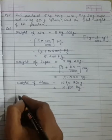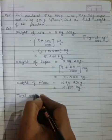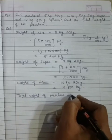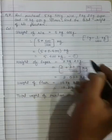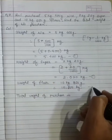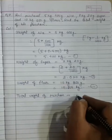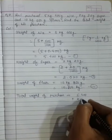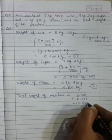Now total weight of the purchase will be the sum of all these three. This one first, this is the second one and this is the third one. So sum it up: 5.400 plus 2.020 plus 10.850.